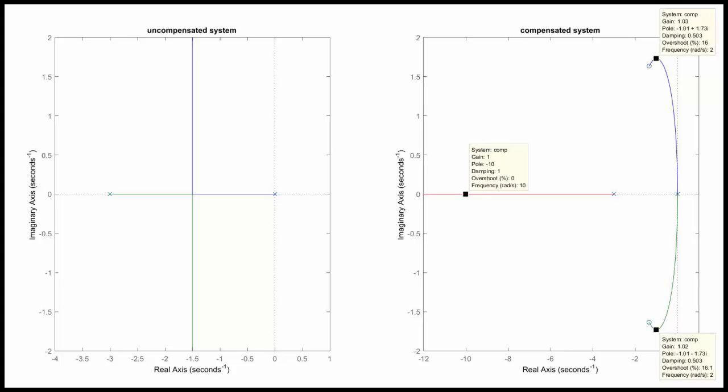So here's the root locus for the compensated and the uncompensated system. On the left, we just have two poles at 0 and negative 3. But there is no way to get negative 1 plus or minus j root 3 or negative 10 as poles from that root locus.